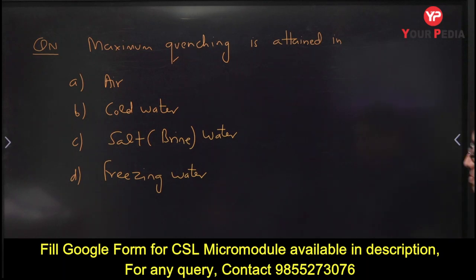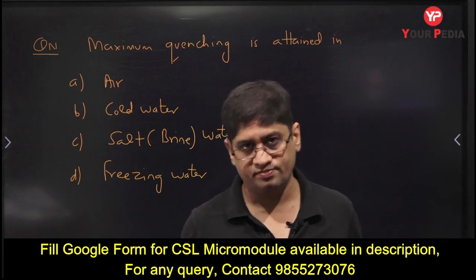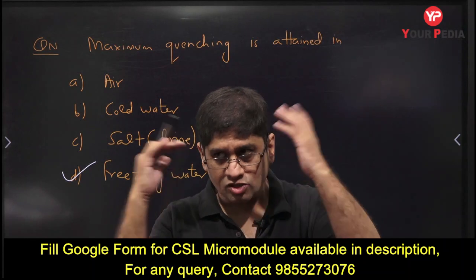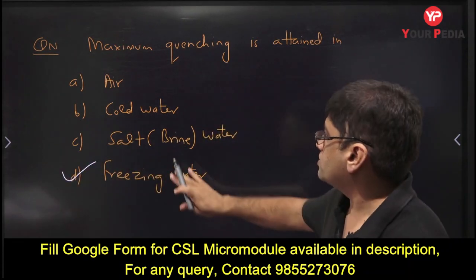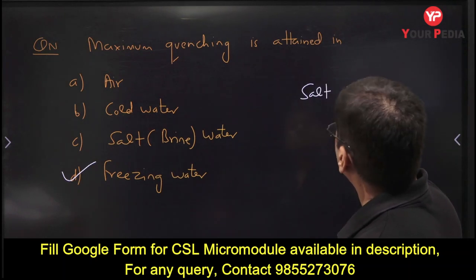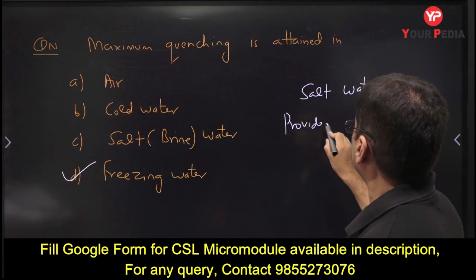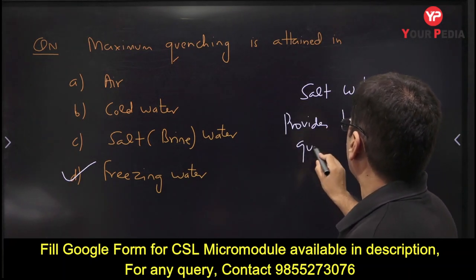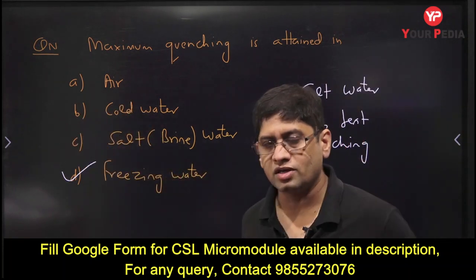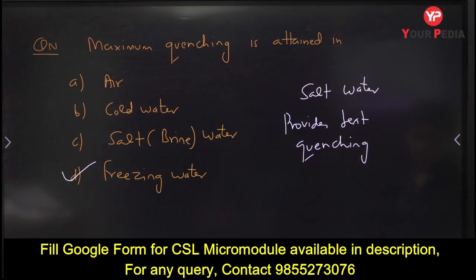Next: maximum quenching is provided by which medium? If freezing water is one of the options, then freezing water gives maximum quenching. However, if the comparison is between air, water, and salt water, then brine (salt water) provides the best quenching. So: salt water is best among air/water/salt water, but freezing water gives maximum quenching if it is listed as an option.